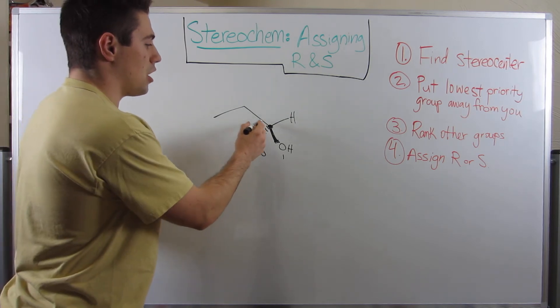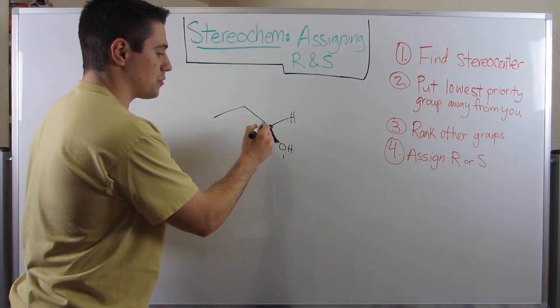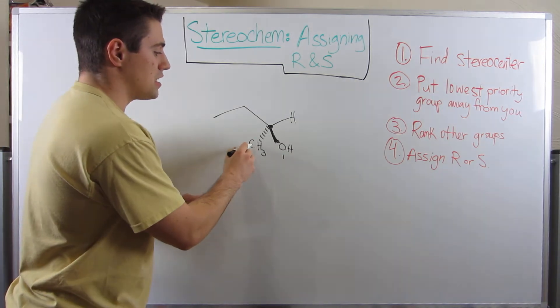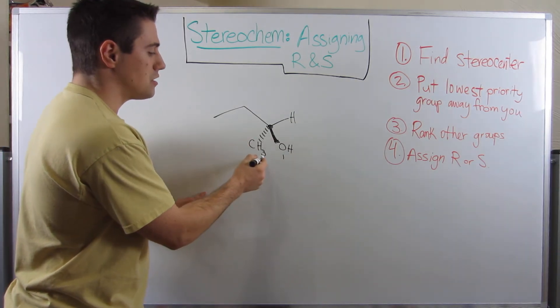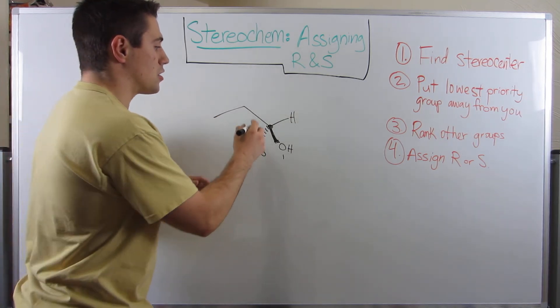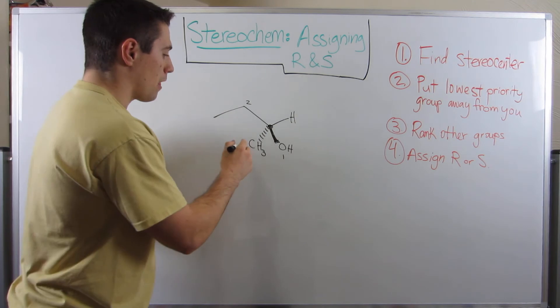So then we need to look to see, okay, straight off of the stereo center, we see a carbon here and a carbon there. So what do we do? Well, you can see that this carbon is attached to three hydrogens and this carbon goes on to bond to another carbon. So he is the second priority. This carbon right here, he's third priority.